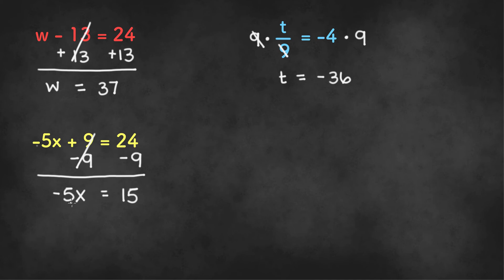Now, since negative 5 is being multiplied to x, we need to divide by negative 5 to isolate the variable. I'm going to divide negative 5 on both sides. We'll end up getting x on the left side and 15 divided by negative 5, which is negative 3 on the right side.